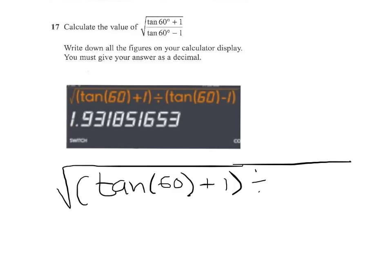Divided by, and then again tan 60 in brackets, so it works out what tan 60 is, and then subtract 1. Close brackets again.